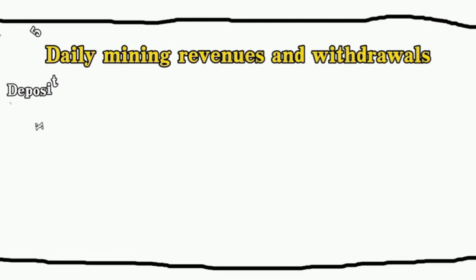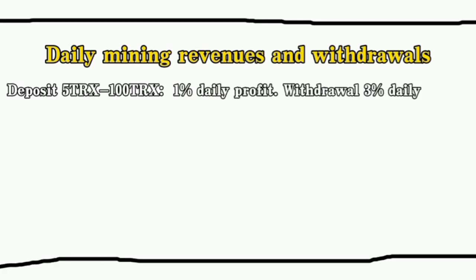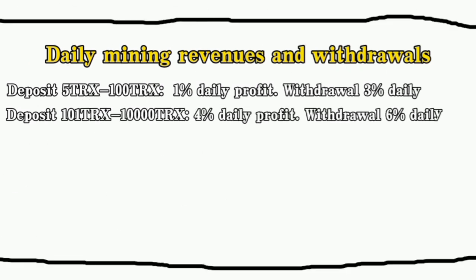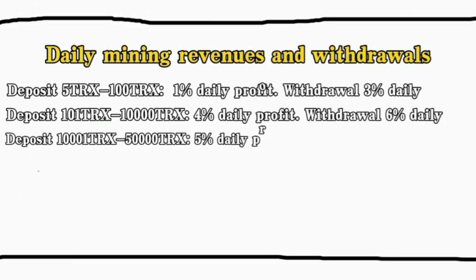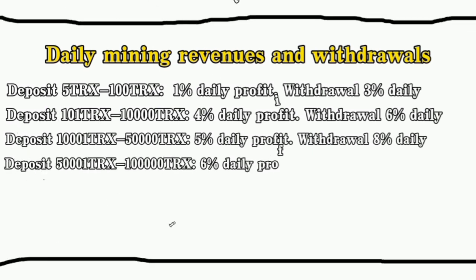Deposit 5–100 TRX to get 1% daily profit and withdrawal 3% daily. Deposit 101–10,000 TRX to get 4% daily profit and withdrawal 6% daily. Deposit 10,001–100,000 TRX to get 5% daily profit and withdrawal 8% daily. Deposit 100,001 TRX to get 6% daily profit and withdrawal 10% daily.